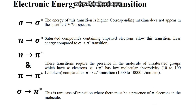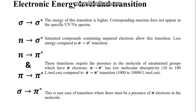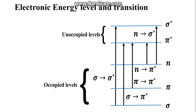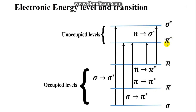The energy states are ordered as follows: σ→σ* has the highest energy barrier because sigma is at the bottom and sigma* is at the top. Then you have n→σ*, followed by π→π* and n→π*. So you can see the energy barrier for n→σ*, π→σ*, and π→π* transitions. All these transitions may be possible if they obey the selection rules.